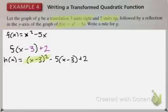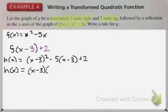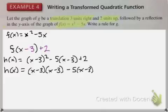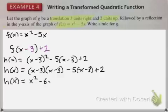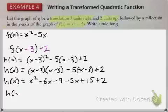And I want you to be careful. This is an area where I see a really common mistake. I want to remind you that x minus 3 squared means x minus 3 times x minus 3. So you are going to need to start foiling that out, distributing negative 5, and then combining like terms. So here's where we get x squared minus 6x minus 9 minus 5x plus 15 plus 2.